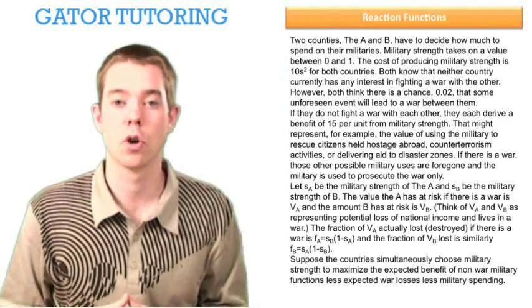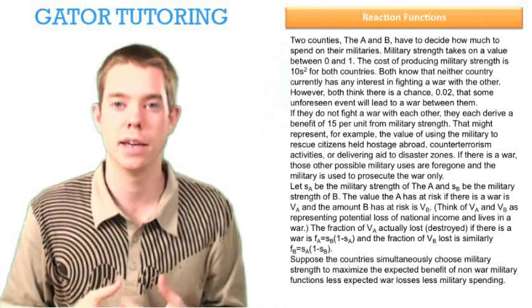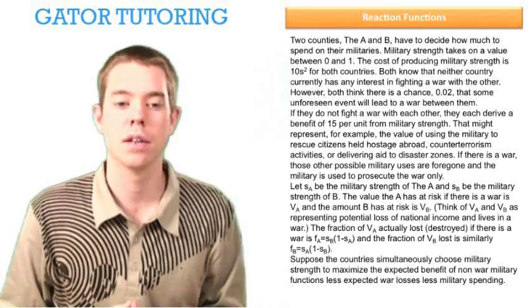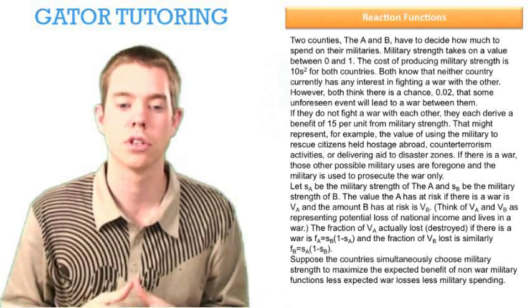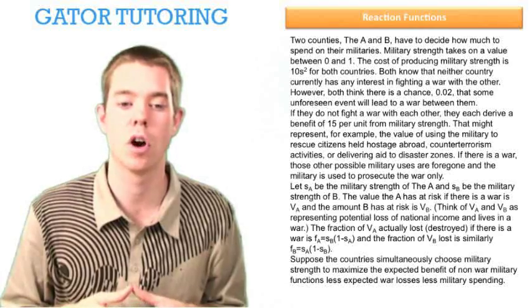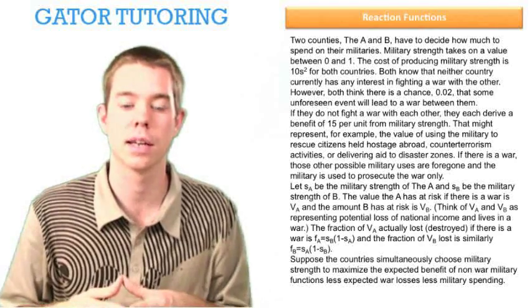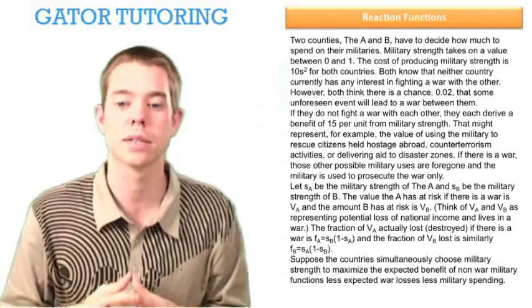This question starts by giving us information about countries A and B. It tells us that these countries will simultaneously choose military strength to maximize the expected benefit of non-war military functions, less expected war losses, less military spending.